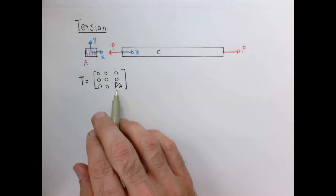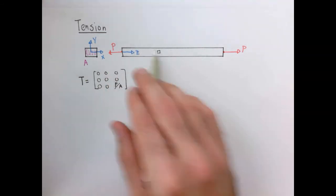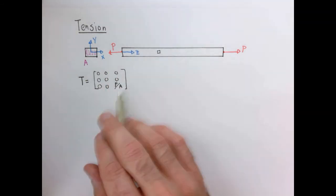So in this case, we're assuming that the stress tensor is constant at every point in this bar. So it's just a single number.